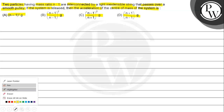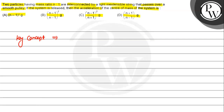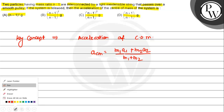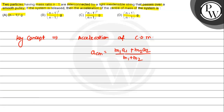The key concept is that the acceleration of the center of mass is given by: a_cm = (m1·a1 + m2·a2) / (m1 + m2). So let's draw a diagram.